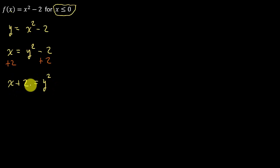And then we take the square root of both sides. So I get y = √(x + 2). Now, this is where students mess up all the time.